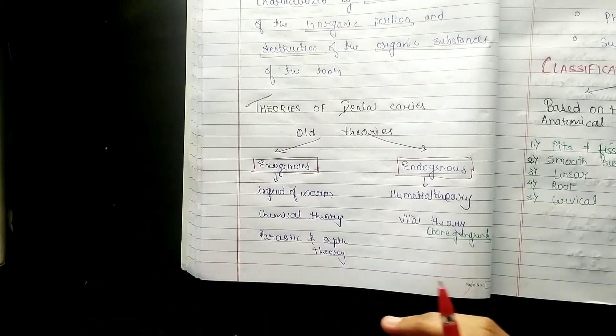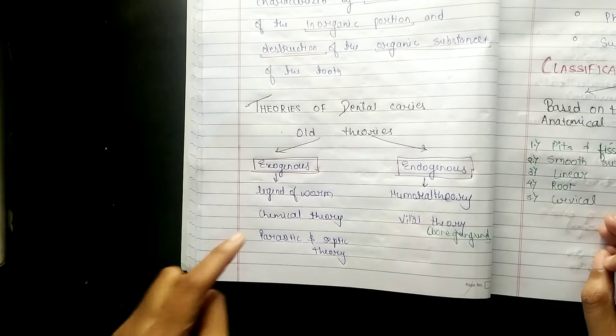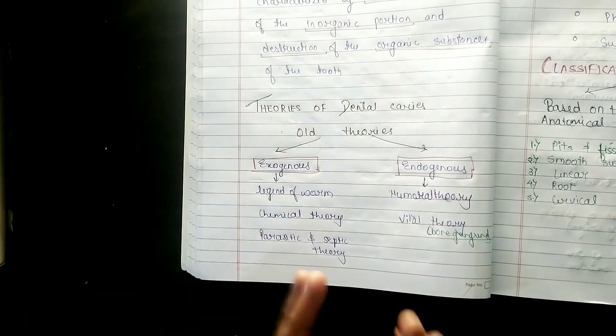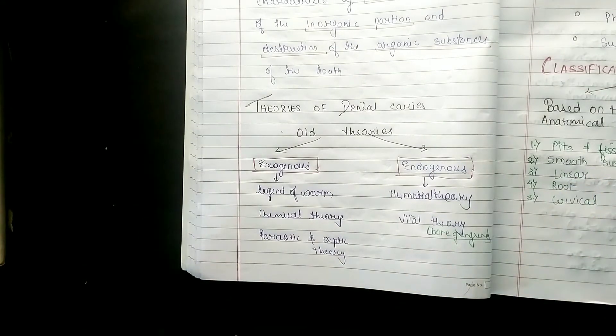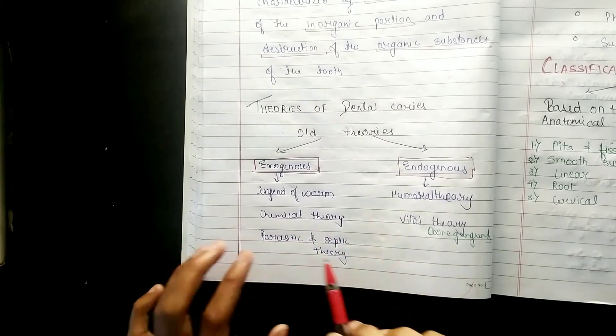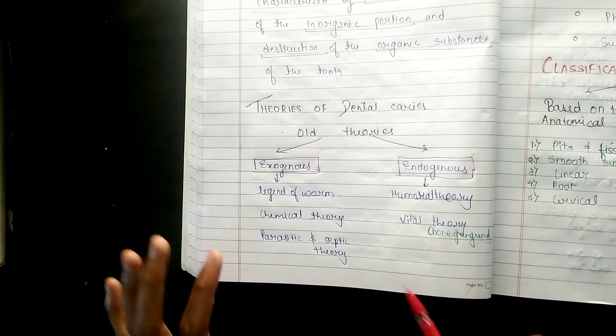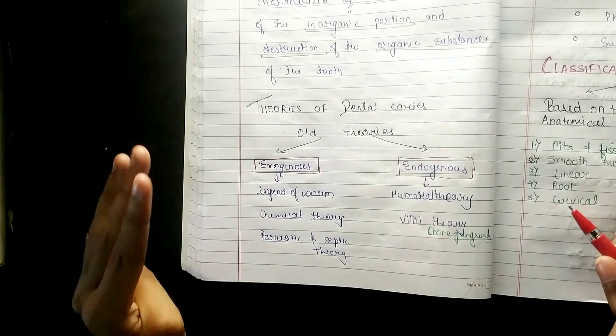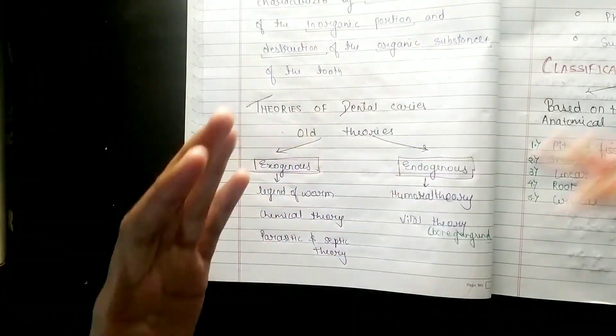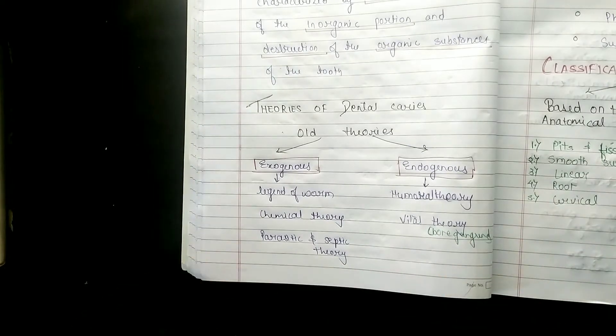Exogenous: my first theory is legend of worm. It may be different to see, but you should know what happens in the legend of worm. First time people thought that the worm is inside your tooth, which is why it hurts your tooth. Then the chemical theory, then the parasitic and septic theory. So these are three exogenous theories, which is what is happening in the oral cavity.